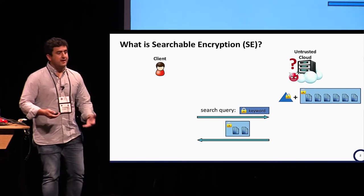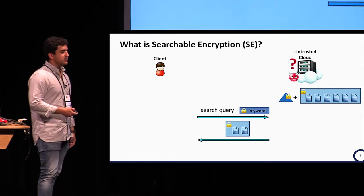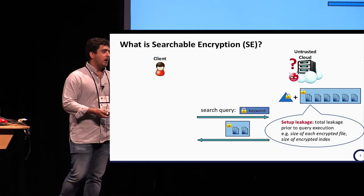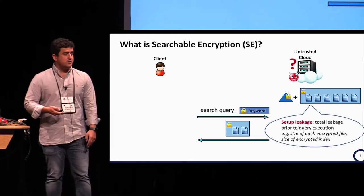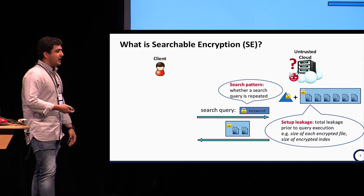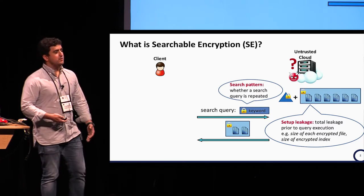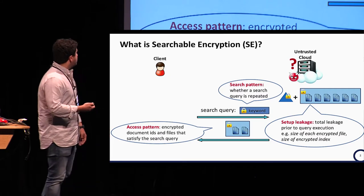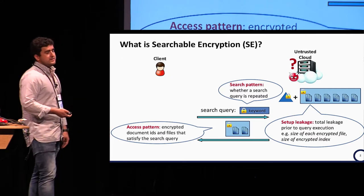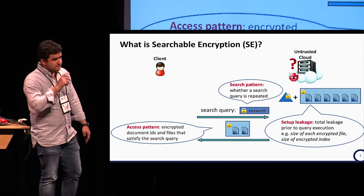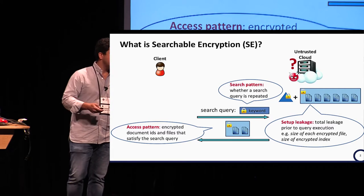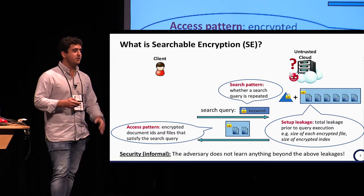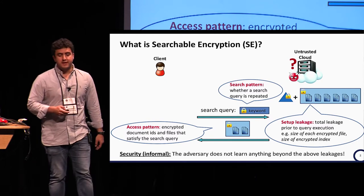Later the client can send encrypted queries and receive back encrypted results. In searchable encryption we have some unavoidable leakages for efficient constructions: the setup leakage, the total leakage prior to query execution, and the query leakage, which is divided into search pattern — whether a query is repeated — and access pattern, which reveals the encrypted document IDs and files satisfying the query. Informally, a scheme is secure if the adversary learns nothing beyond these leakages.